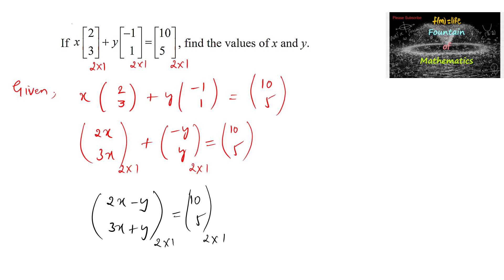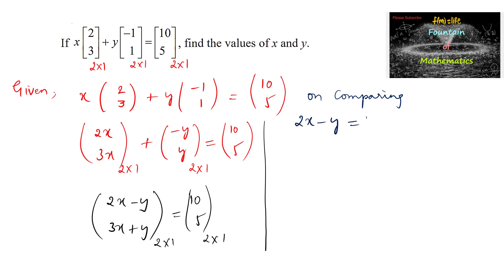Since both matrices have the same order, we equate the corresponding elements. Comparing gives us: 2x − y = 10 and 3x + y = 5.